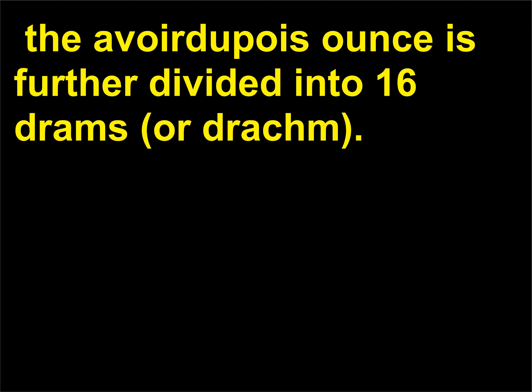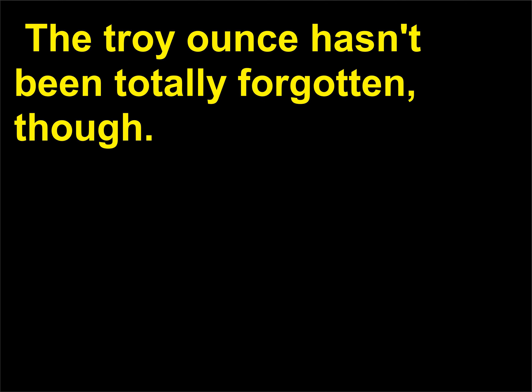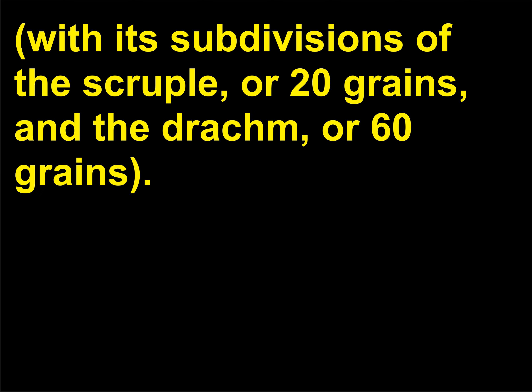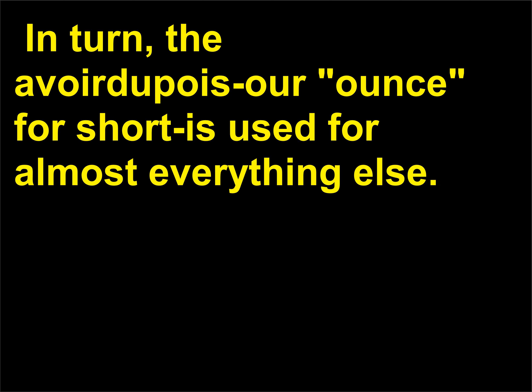The Avoirdupois ounce is further divided into 16 drams. The troy ounce hasn't been totally forgotten, though. Today it is used mainly as units for precious metals and drugs, where it is often called the apothecaries ounce, with its subdivisions of the scruple, or 20 grains, and the dram, or 60 grains. In turn, the Avoirdupois ounce is used for almost everything else.